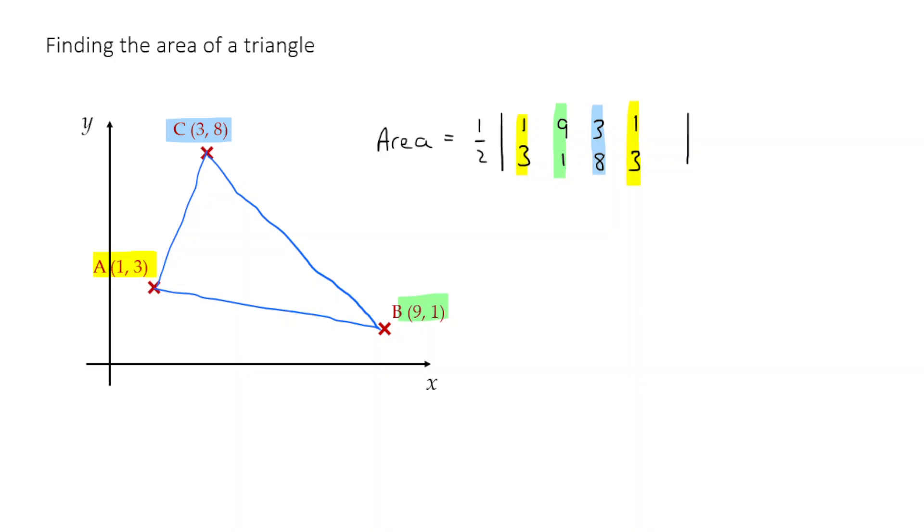So just to clarify, what am I doing? I'm putting in the coordinates of the point A, B, and C, and then A again, into this structure. Now then, how am I going to progress from there? Well, let me just delete these colors there.